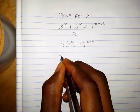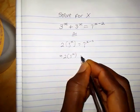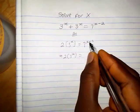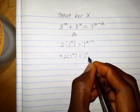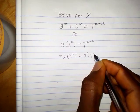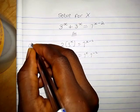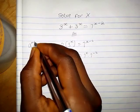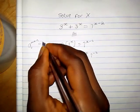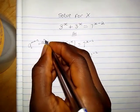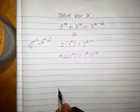This implies that we have 2 into 3 raised to the power x equals 7 raised to the power x times 7 raised to the power minus 2, by applying the rules of indices. That is, whenever we have a raised to the power n plus m, it is simply the same thing as a raised to the power n times a raised to the power m.